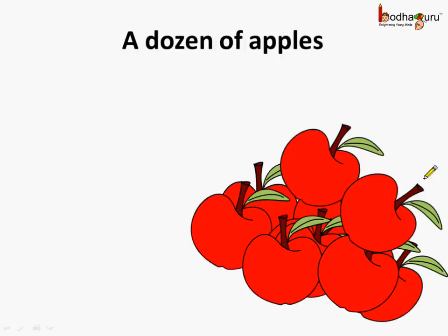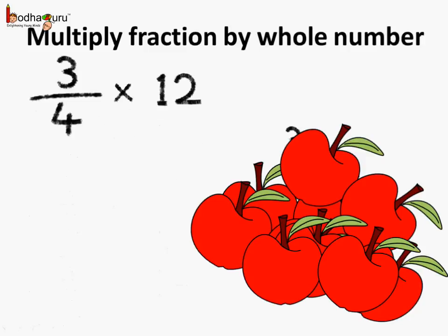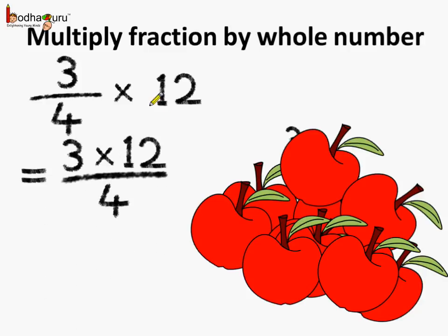Suppose there are a dozen apples and we need to find what is 3 fourth of a dozen. We need to find 3/4 of 12, as 1 dozen means 12. Since the whole number is multiplied by the numerator, we can write it as 3 multiplied by 12 divided by 4. Now this can be simplified — we can divide 4 and 12 by 4, since 4 times 3 is 12.